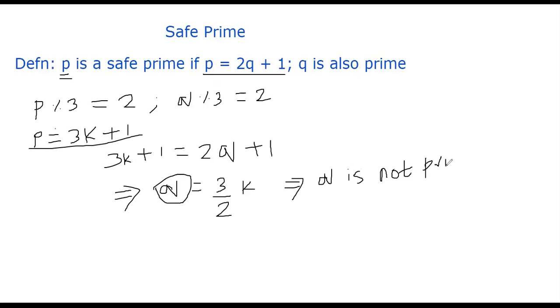That means the only possibility for p mod 3 has to be 2, right? So we proved that fact that p mod 3 must be 2. And similarly, you can also prove yourself that q mod 3 has to be 2. I will show you how.